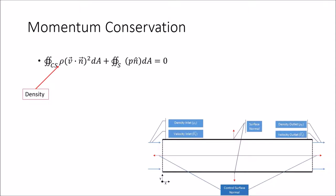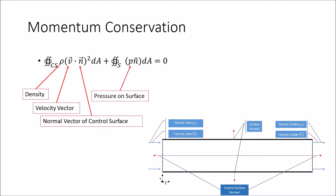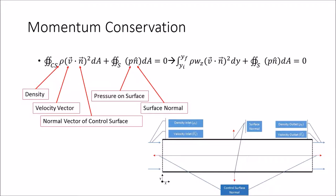Reviewing the momentum equation, we have the density, the velocity vector, the normal vector of the control surface, the pressure on the surface, and the surface normal. As you can see in the diagram, the surface normals and control surface normals all point outward away from the control volume. It should be noted that when we say to use the surface normal, control surfaces are a type of surface and will be included within that contour integral. We can simplify assuming that the inlet and outlet will only be along the y-axis.